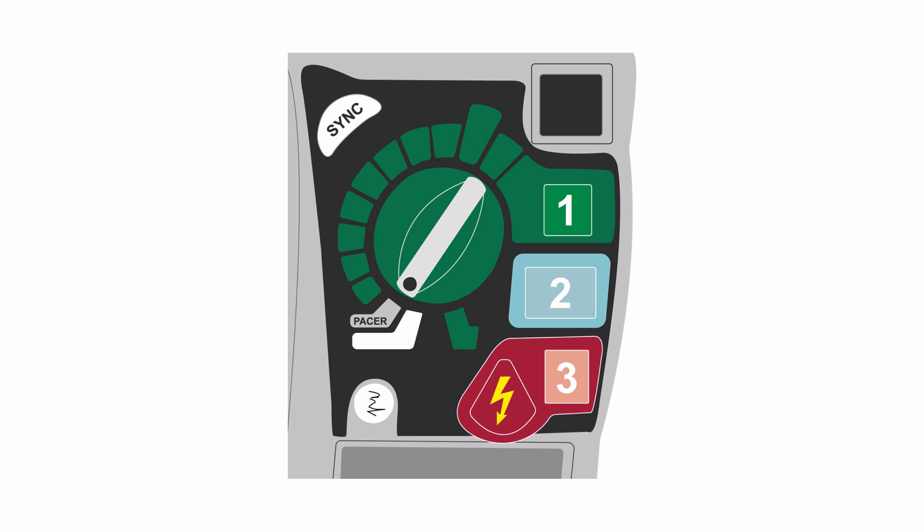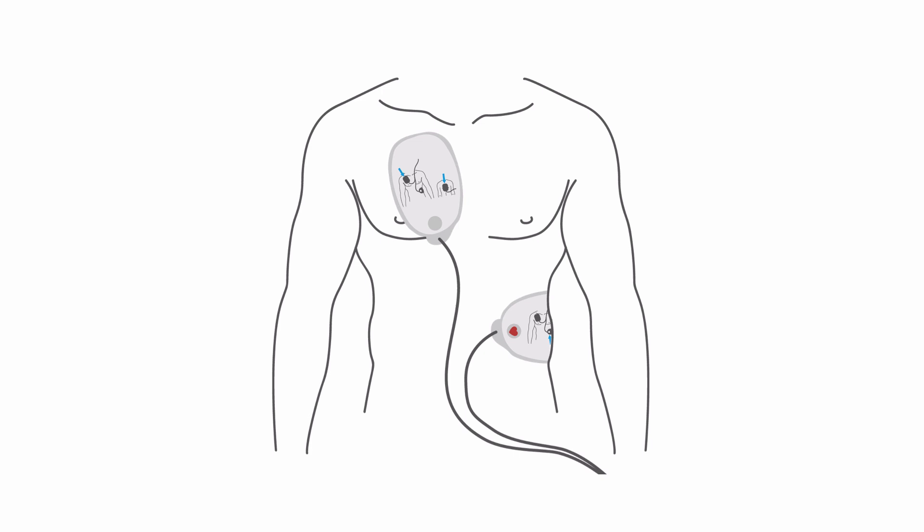Most defibrillator machines can be converted to a transcutaneous pacer by turning on the pacer feature. Pacer pads are placed in the same way as a defibrillator, but because the pads cannot both sense and pace at the same time, you have to connect the monitor leads to the machine.